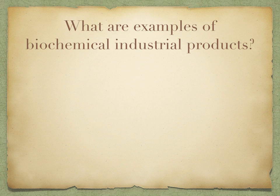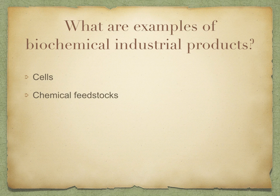Examples of biochemical industrial products include cells such as single-cell proteins, and starter cultures such as baker's yeast. Chemical feedstocks include ethanol, butanol, acetic acid, citric acid, and lactic acid, as well as food additives. Proteins include enzymes, antibiotics, antibodies, vaccines, and amino acids.